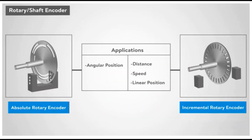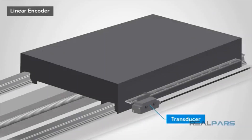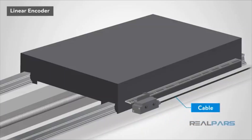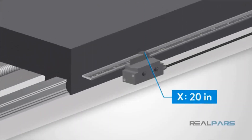In an absolute encoder, each position is referenced with a unique code, so the position is always known. A linear encoder is always more accurate than a rotary encoder since there are no mechanical losses. When the rotary encoder measures the position by way of the number of turns the ball screw has rotated, a linear encoder directly measures the position.